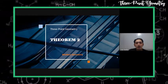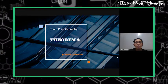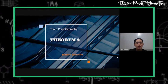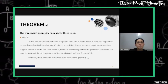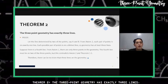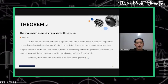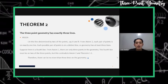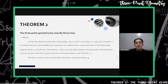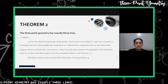Since theorem one for the three-point geometry was already discussed by my co-member, our theorem two states that the three-point geometry has exactly three lines. Let the line determined by two of the points, say A and B. From axiom two, each pair of points is on exactly one line, so each possible pair is on a distinct line. The geometry has at least three lines.